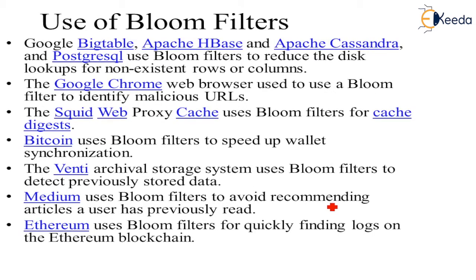Applications of the Bloom filter include Google Bigtable, Apache HBase, Apache Cassandra, and PostgreSQL. In Google Chrome it helps determine whether a URL is malicious or not. Bitcoin, Ethereum, and other blockchain platforms use Bloom filters — specifically Ethereum uses a Bloom filter for quickly finding logs on the Ethereum blockchain, and Bitcoin uses Bloom filters to speed up wallet synchronization.